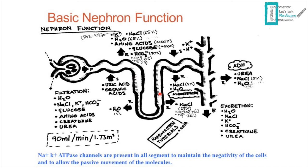In the loop of Henle, we have the descending part and the ascending part. In the thin descending part it is highly permeable for water. The thin ascending loop has not much significance in reabsorption. However, the thick ascending loop of Henle is really important for the remaining 25% of Na. Most Na is reabsorbed in the proximal tubule; what's left is in the thick ascending loop of Henle. Then in the distal and collecting tubule the rest of water and 5% of Na are reabsorbed.